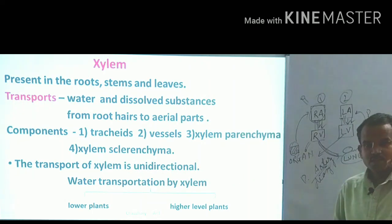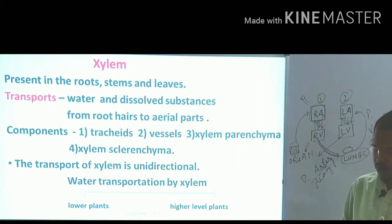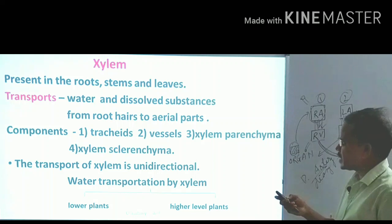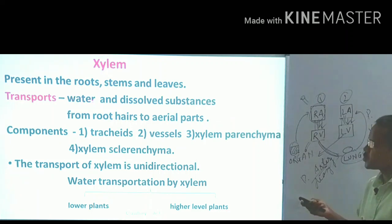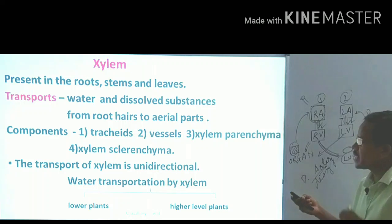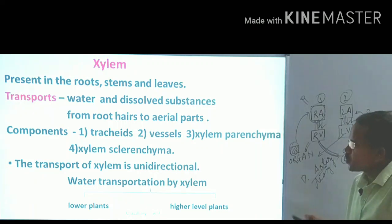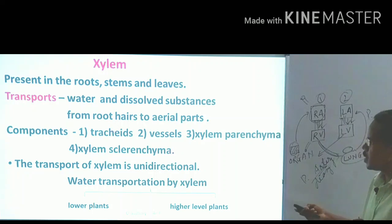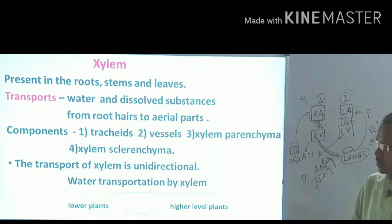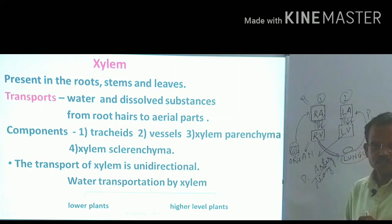Xylem is always associated with transportation of water. It is present in roots, stems, and leaves — everywhere water transport is needed. Xylem transfers water and dissolved substances from the root to the aerial parts. Its components, as a complex tissue, include tracheids, vessels, xylem parenchyma, and xylem sclerenchyma. Transport through xylem is unidirectional — only one direction.